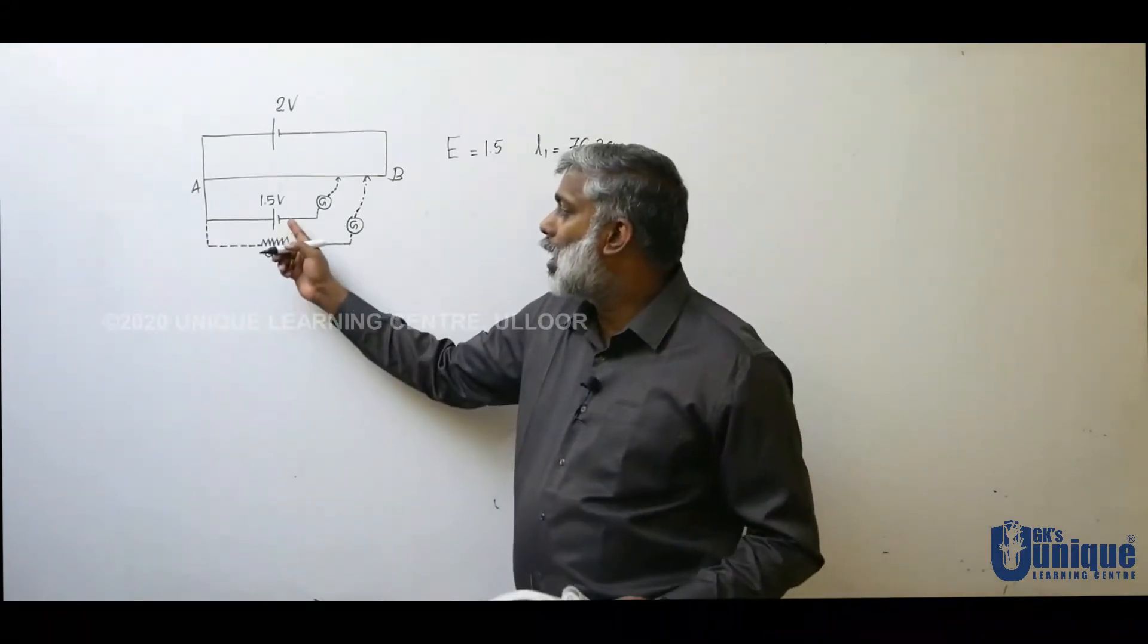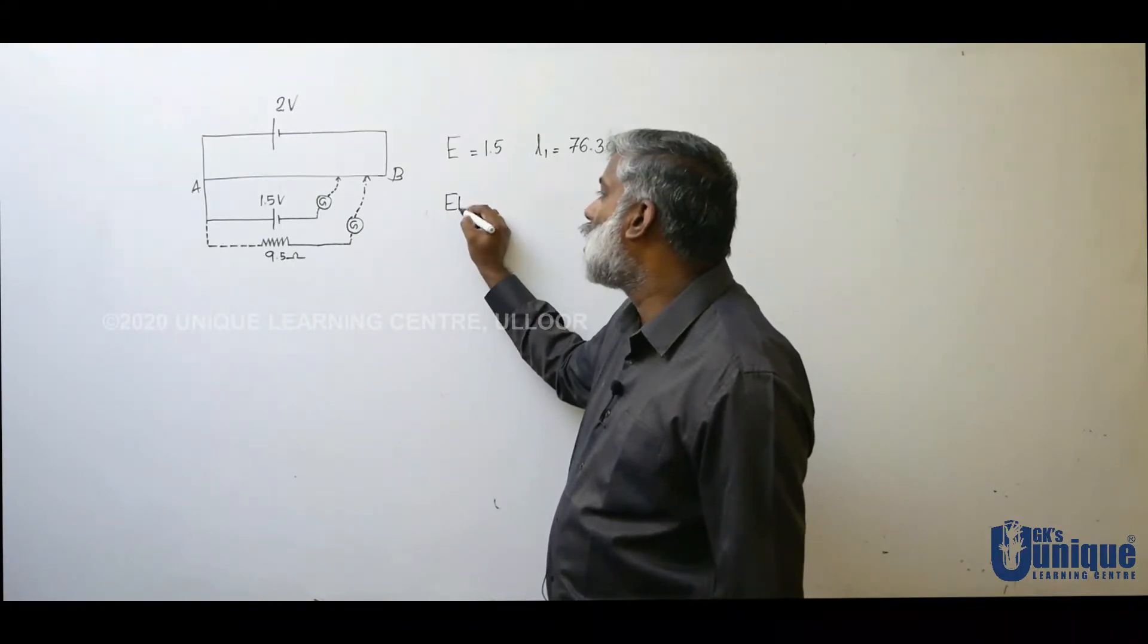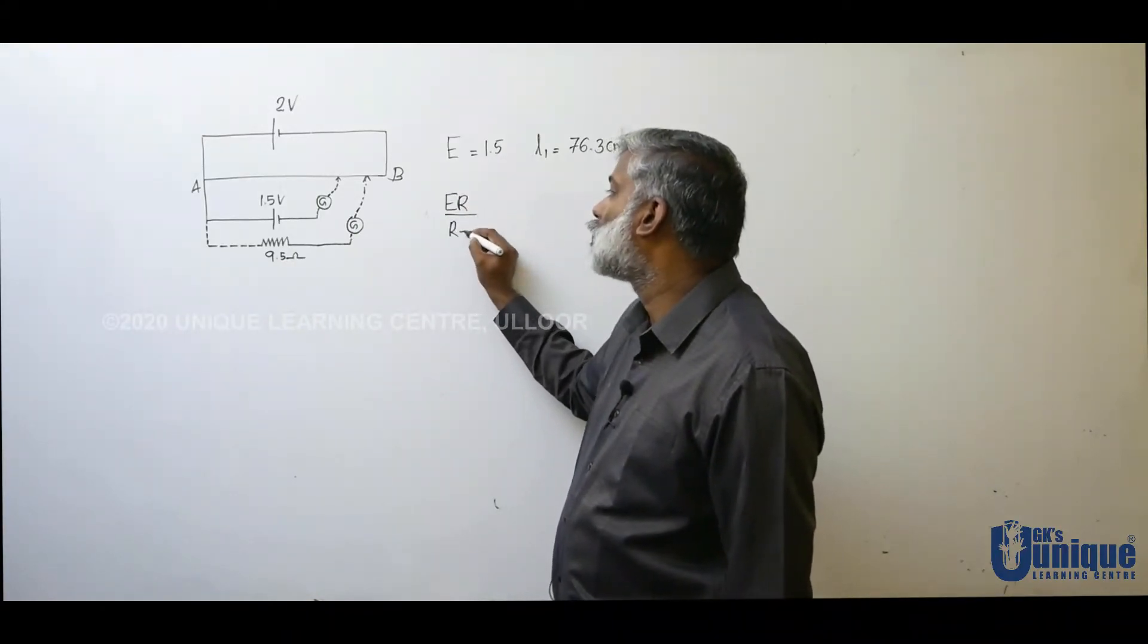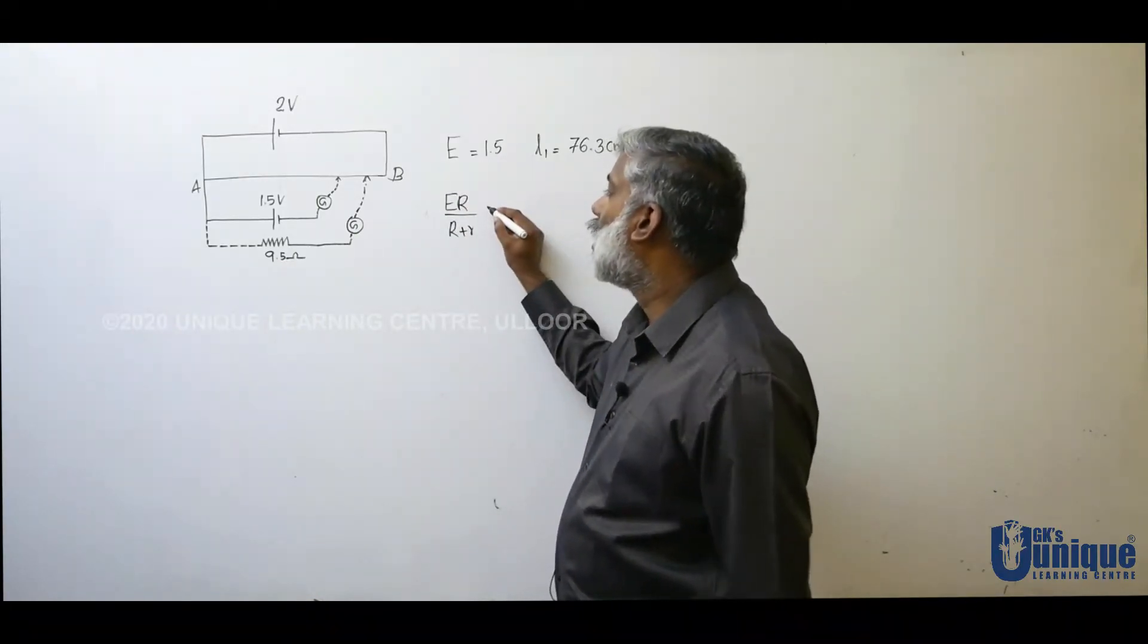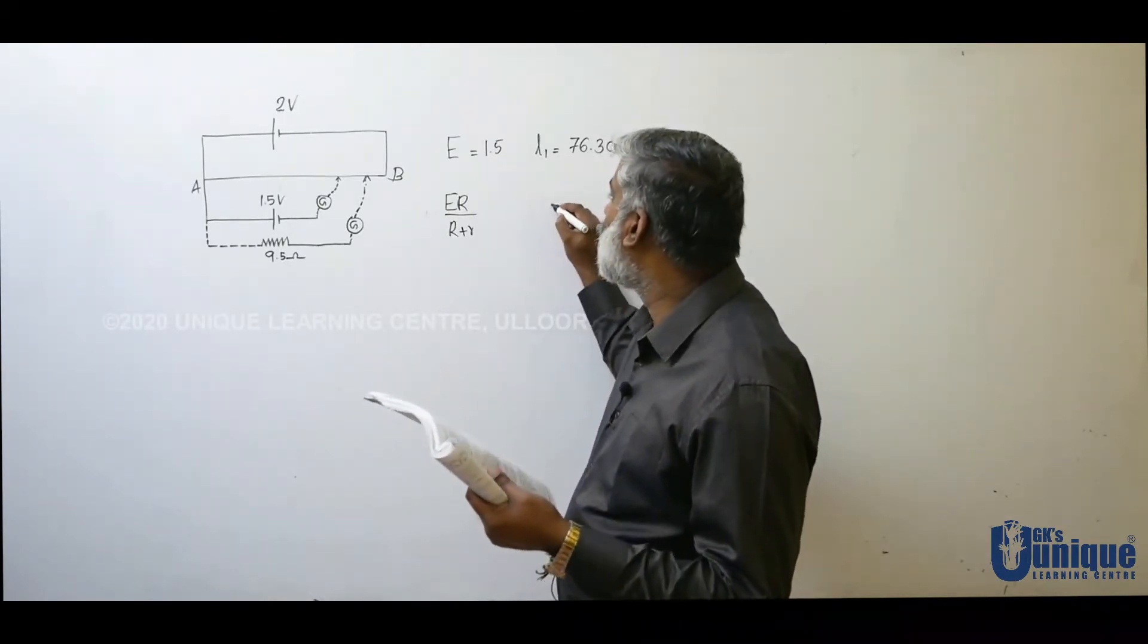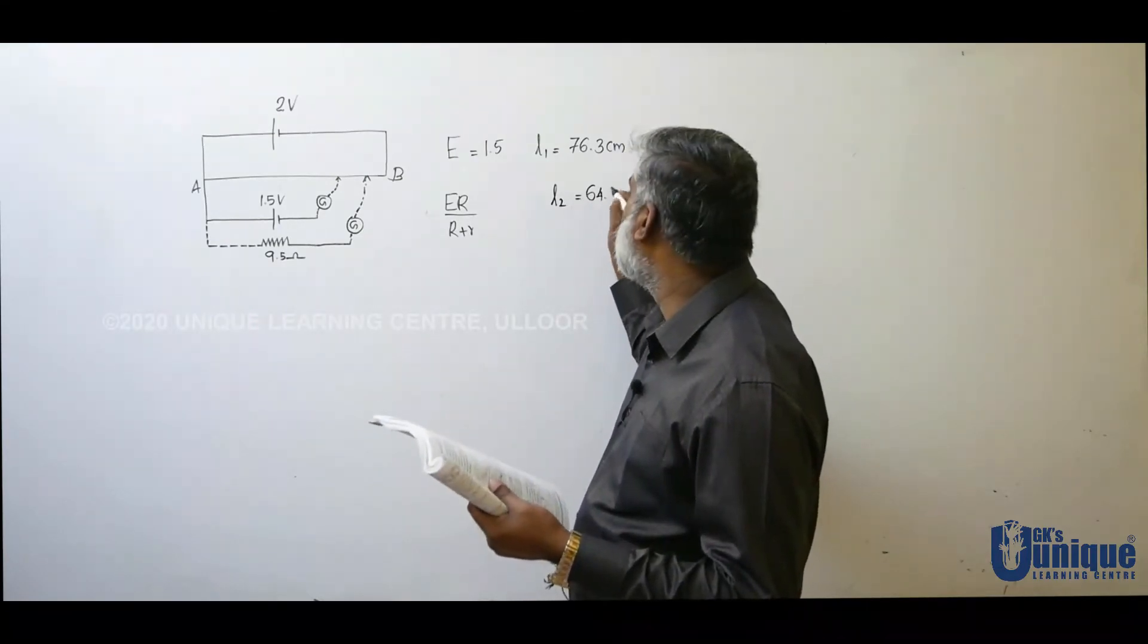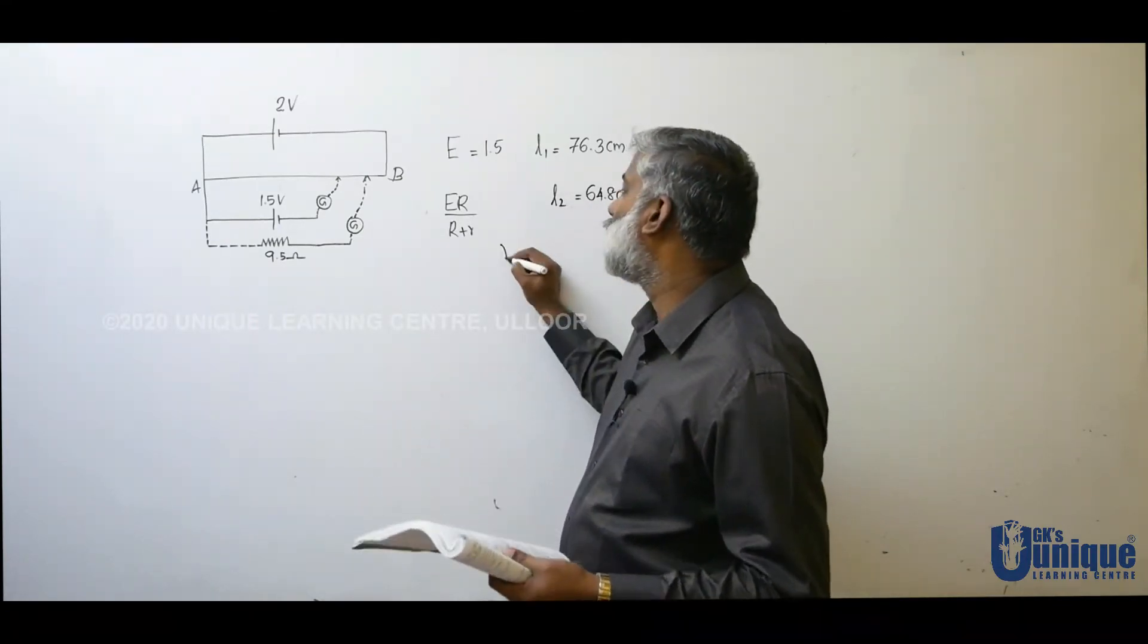This cell in the EMF is E times R by R plus r times I. E times R by R plus r times I. That is the balance length L2 is 64.8 cm. What is small r? We have 2 parts of the experiment.